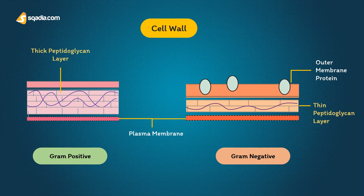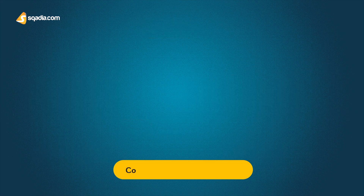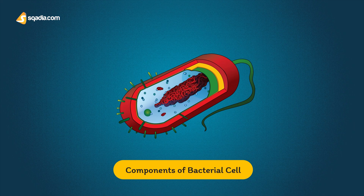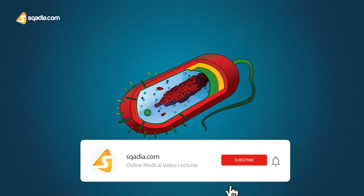The mycobacterial cell wall has a high proportion of lipid, including immunoreactive antigens. Bacterial cell shape can also be used in classification. We will now discuss six components of a bacterial cell that are important for its classification, pathogenicity, and therapy.